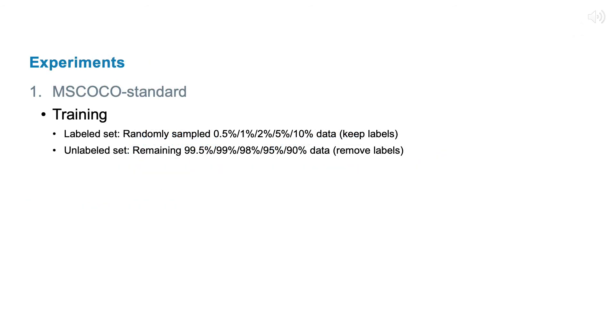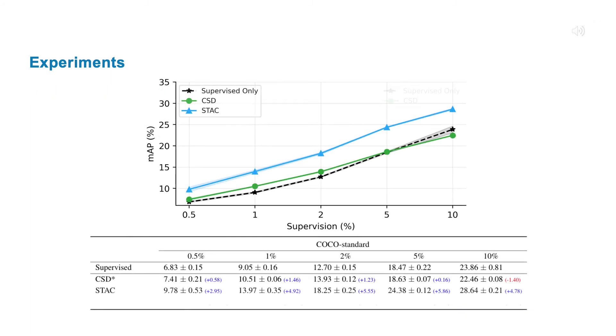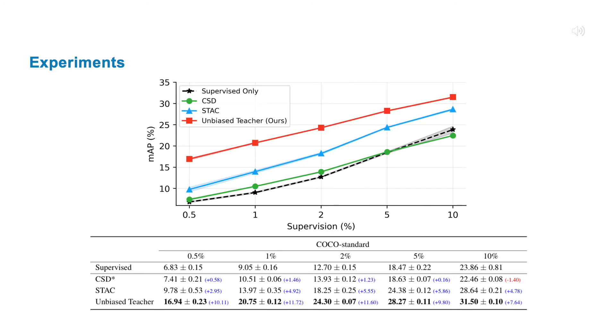In the first experiment, we test our Unbiased Teacher on MS-COCO standard benchmark, where only 0.5% to 10% data are labeled. By addressing the pseudo-labeling bias issue in object detection, our Unbiased Teacher can improve around 10 absolute AP against supervised-only baseline, and significantly outperforms other baseline methods.